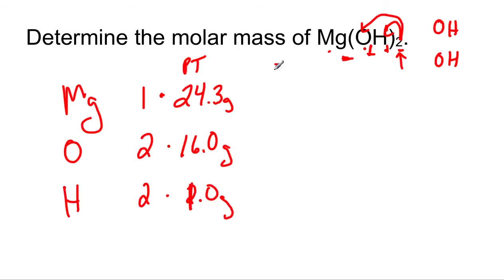Then you get your subtotals. 1 times 24.3 is still 24.3. 2 times 16, subtotal of oxygen is 32. And 2 times 1, subtotal is 2.